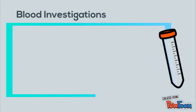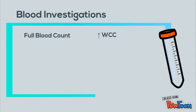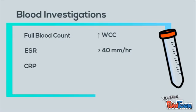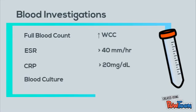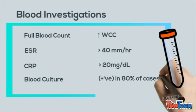A full blood count will show increased white cells with a differential illustrating neutrophilia. The ESR will be above 40 and CRP above 20. Blood culture is positive in 80% of cases.